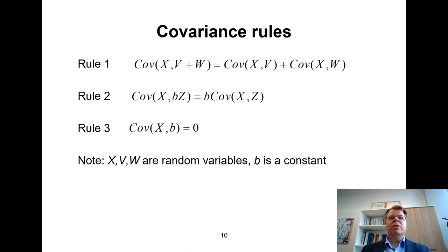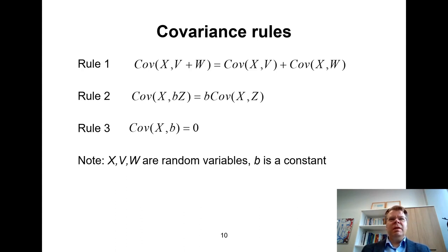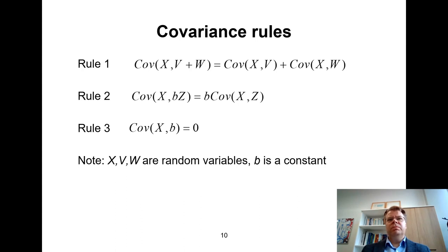I will briefly walk you through these three covariance rules. In the first rule, we consider three different random variables: X, V, and W. The first rule says that if we are interested in the covariance between X and the sum of V and W, then we can take the covariance separately — covariance of X and V plus covariance of X and W. This sum of covariances equals the covariance of X and V plus W. So covariance in this sense is separable.